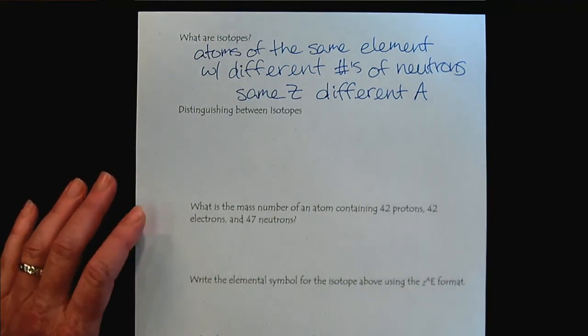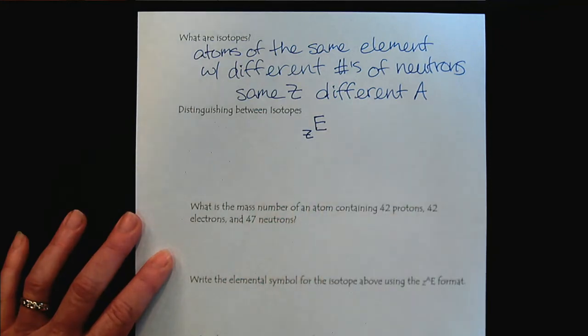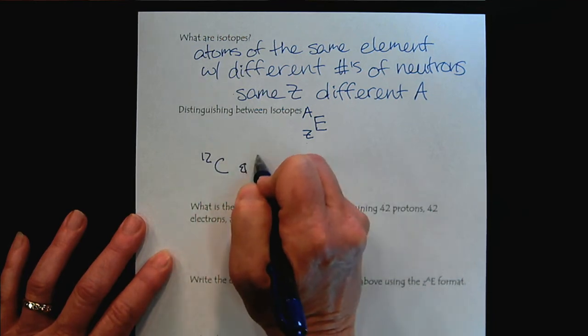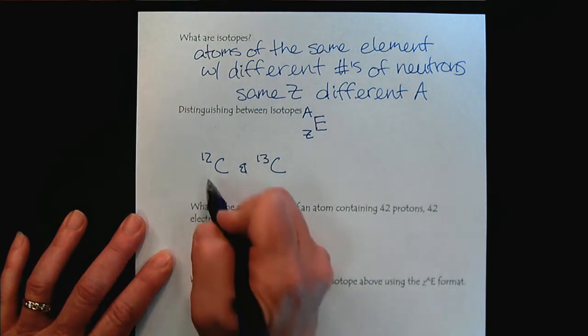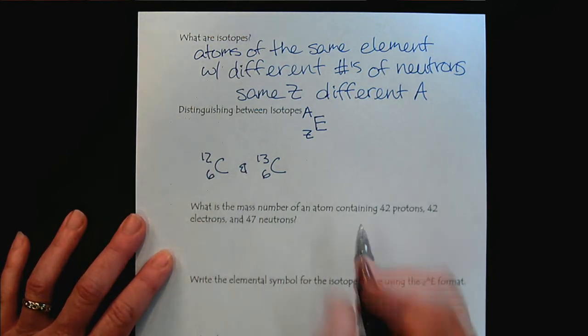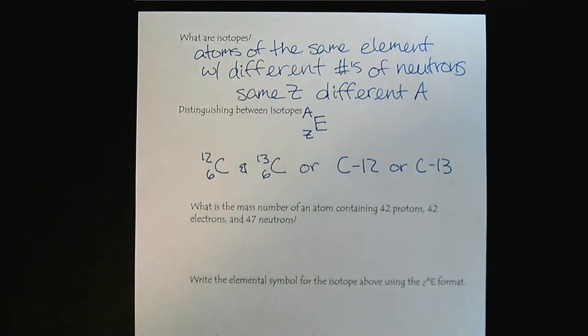So when we're distinguishing between isotopes, there is a convention we use with the symbols. If I just use E to represent any element, we put the atomic number in the lower left corner, and the mass number in the upper right corner. For example, if we wanted to look at like the isotopes of carbon, there is carbon-12 and carbon-13. It's often encountered that we leave off the atomic number because it's the same for all the carbon elements. The other option is we write the elemental symbol and then a dash, and then we put the mass number following the elemental symbol. So there are two different conventions that you'll commonly see when isotopes are important in the conversation.